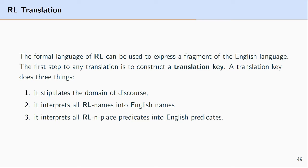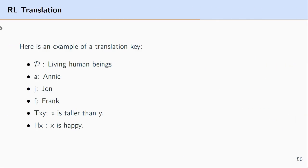In predicate logic we have uppercase letters like R, P, Q, and we need a way to translate those into English predicates like 'is happy', 'is tall', or 'is greater than'. Let's look at an example of a translation key.